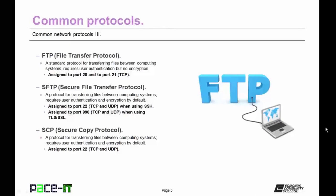SFTP — Secure File Transfer Protocol — is more secure than FTP. It requires user authentication and encryption by default. It's assigned to port 22 using TCP and UDP when SSH is used for encryption, or to port 990 when using TLS or SSL for encryption. Then we have SCP — Secure Copy Protocol — a protocol for transferring files between computing systems that requires user authentication and offers encryption by default. It is assigned to port 22 and uses TCP and UDP as its layer 4 protocol.